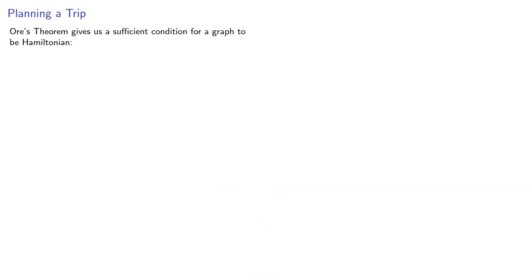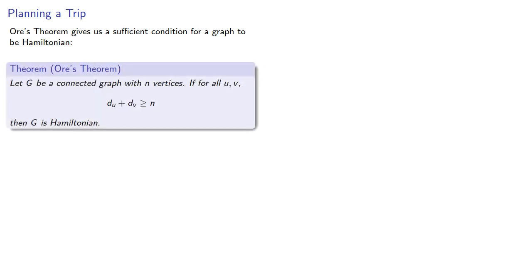Euler's Theorem gives us a sufficient condition for a graph to be Hamiltonian. We can use this in two ways. If it's true, then we know the graph is Hamiltonian, and if it's not true, then we know, well, nothing.